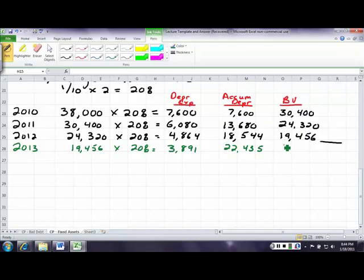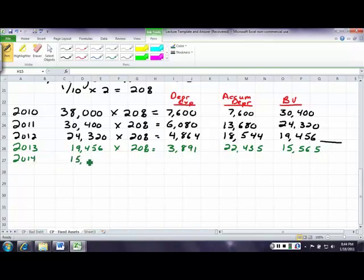For 2014, $15,565 times 20% equals $3,113, which equals $25,548, or $12,452.